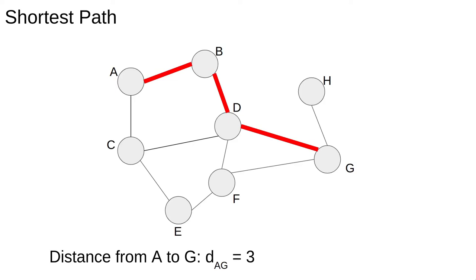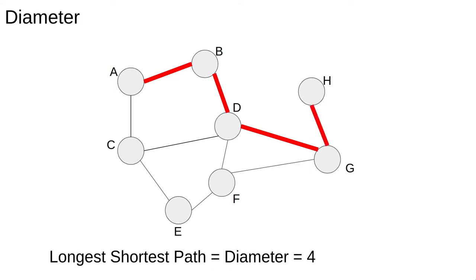There is another path, not shown, of the same length. The diameter of a network is the largest distance between any two nodes. It is the longest shortest path. In this network, the longest shortest path is 4, so the diameter of this network is 4.